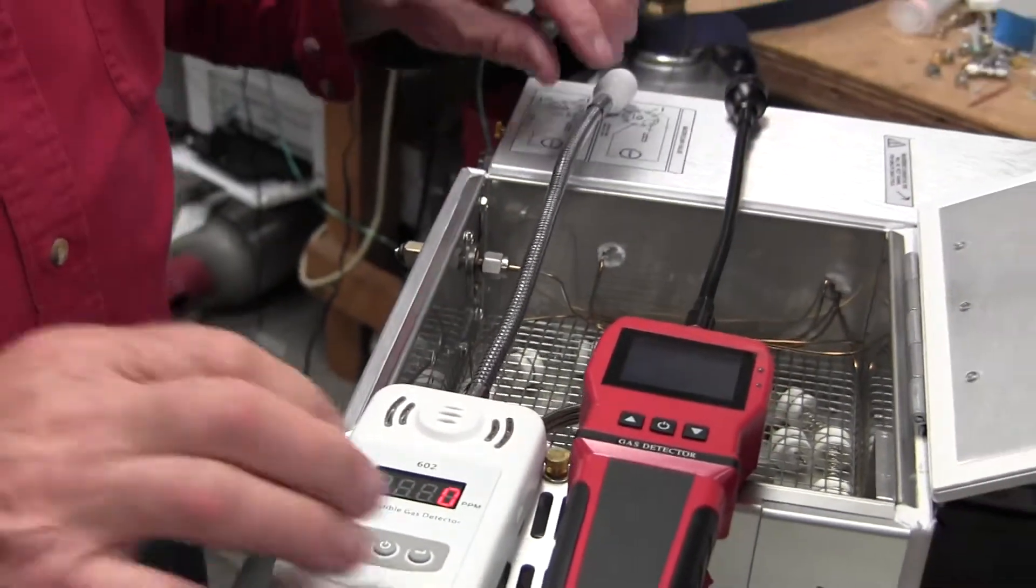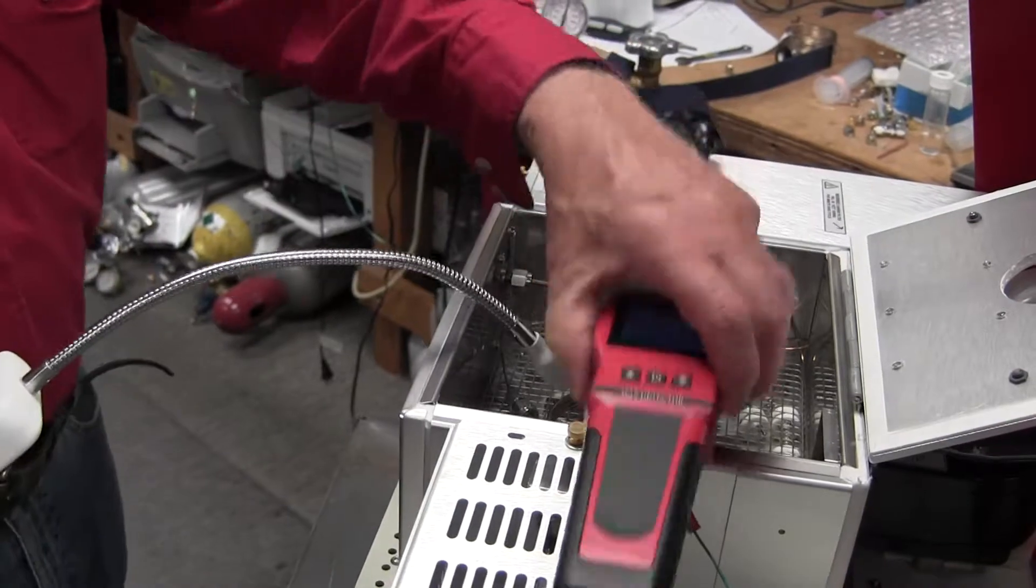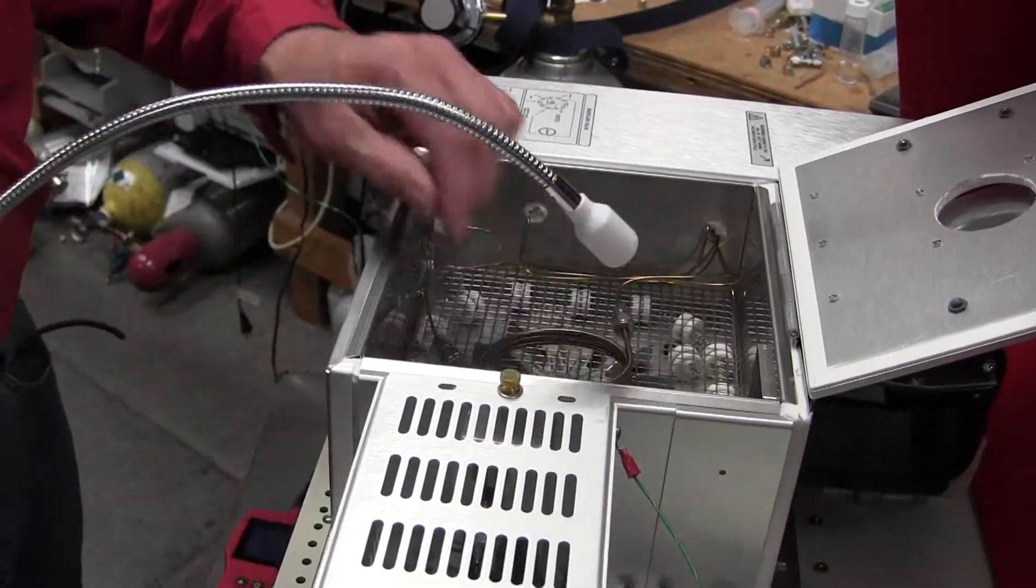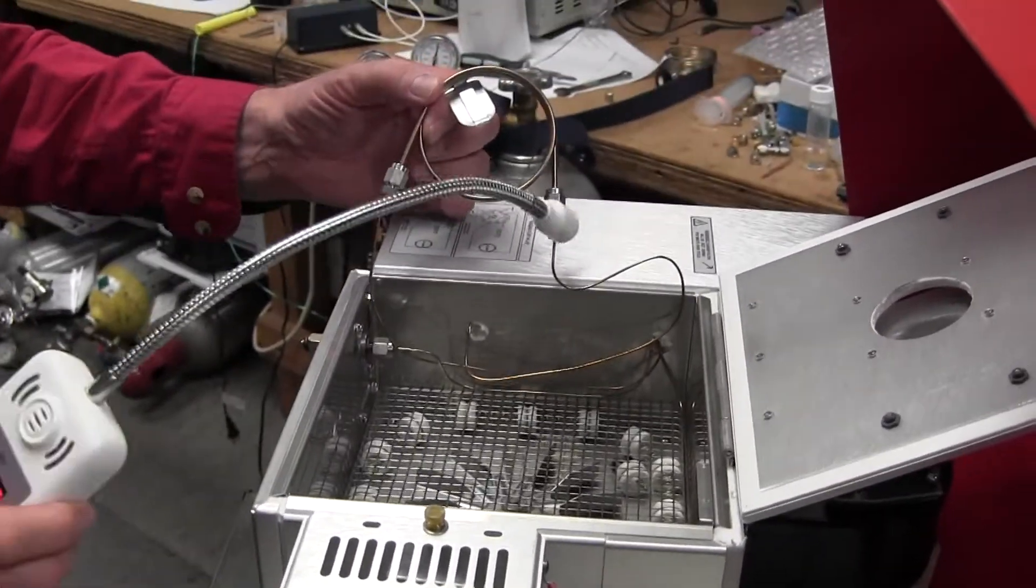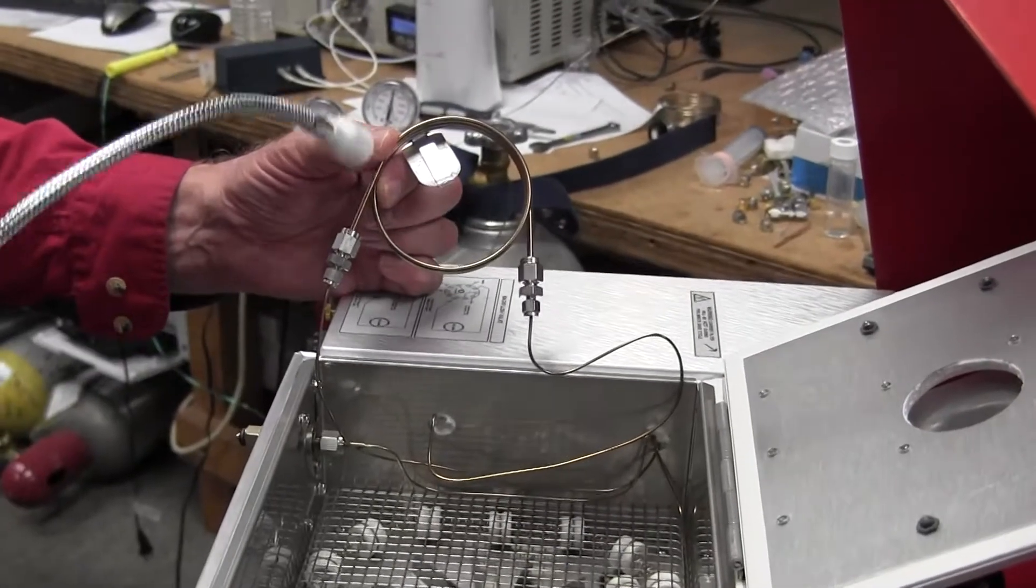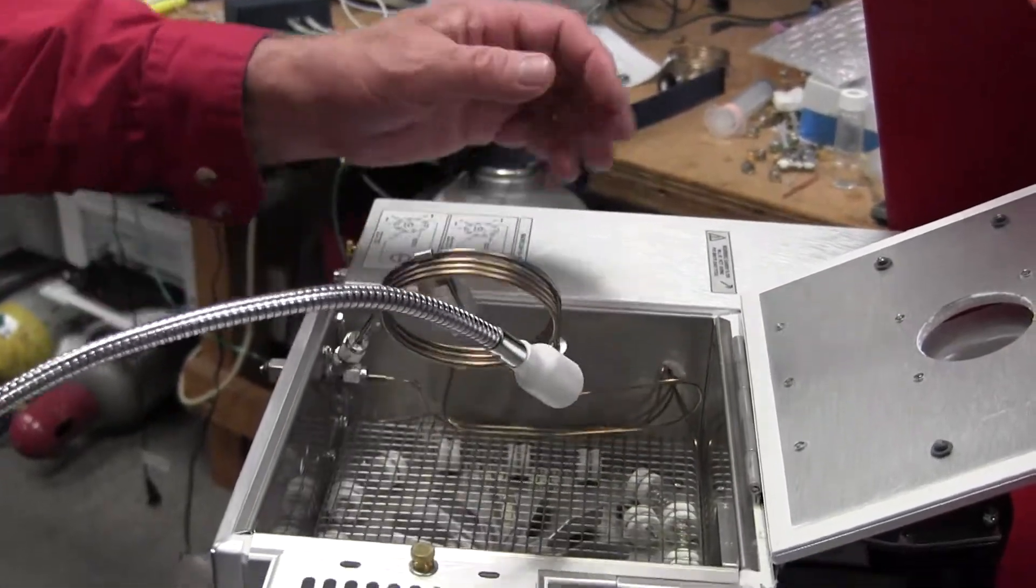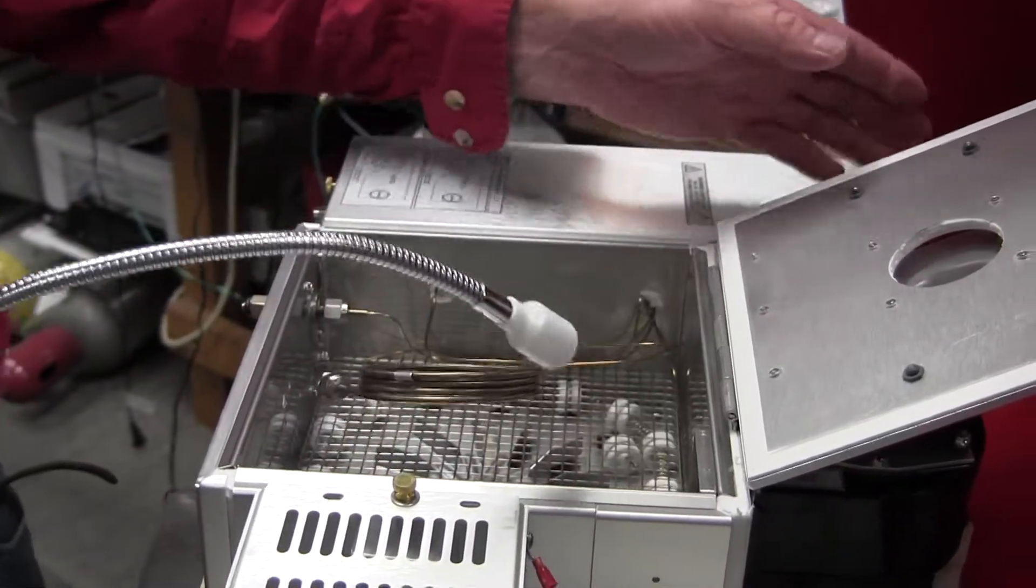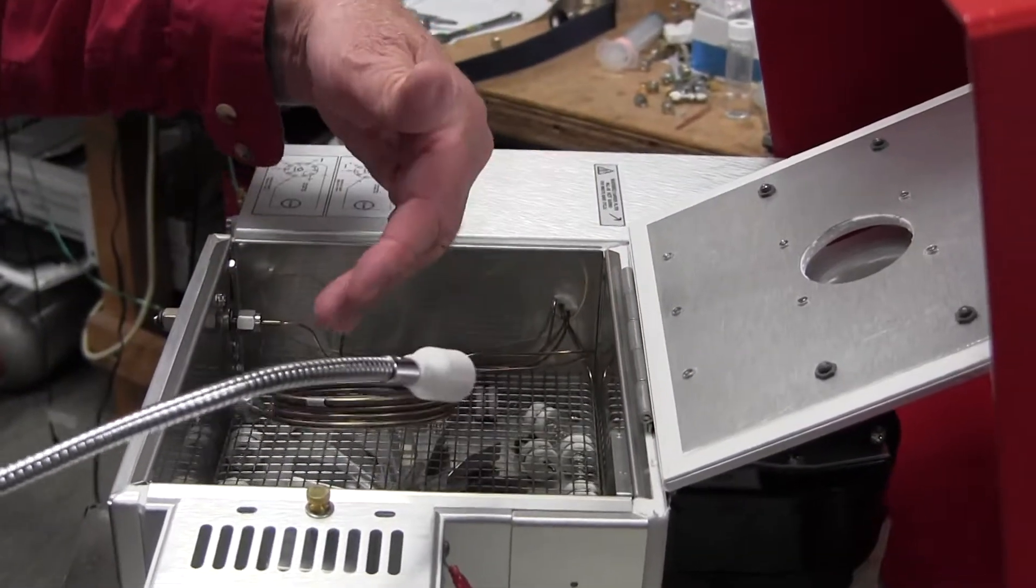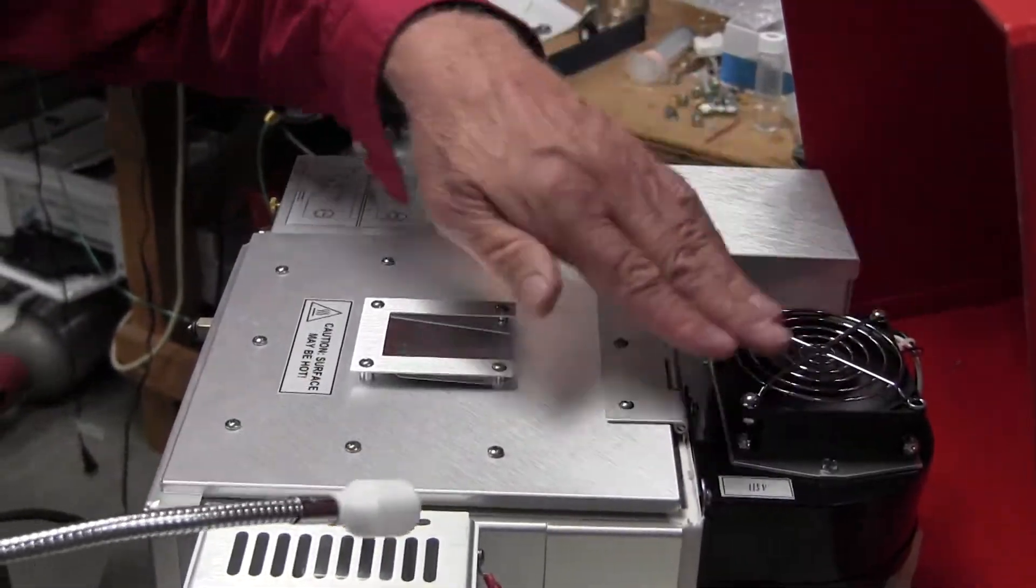There's one other trick that we like, because a lot of times the leaks are going to be in the connections between the column and the tubing, or between column and column, or something in the column oven. When the GC is on, there's air blowing into the column oven from this cooling fan here.